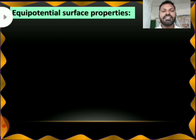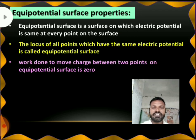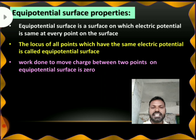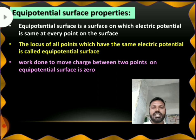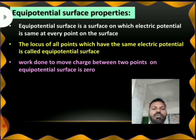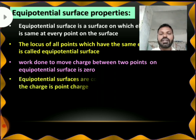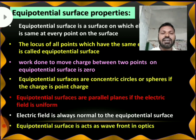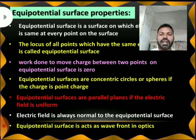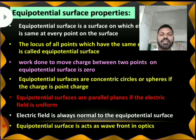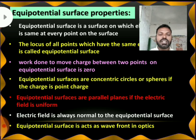Equipotential surface properties: An equipotential surface is a surface on which electric potential is the same at every point. The locus of all points which have the same electric potential is called an equipotential surface. The work done to move a charge from one point to another on the equipotential surface is 0. Equipotential surfaces are concentric circles or spheres if the charge is a point charge, and parallel planes if the electric field is uniform. The electric field is always perpendicular to the equipotential surface. Equipotential surfaces act like wavefronts in optics.